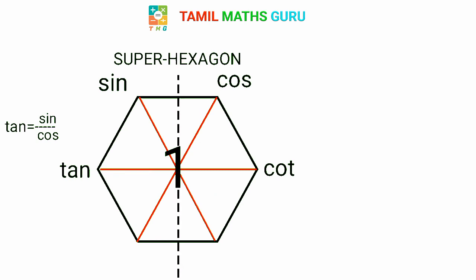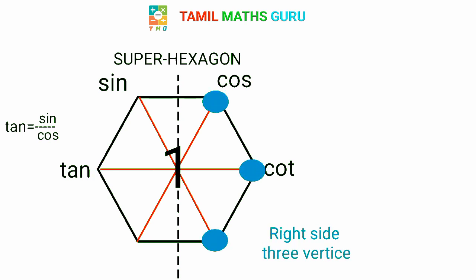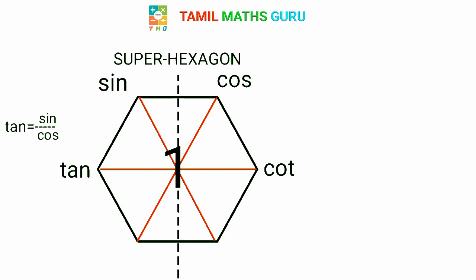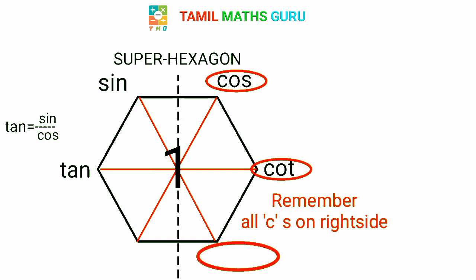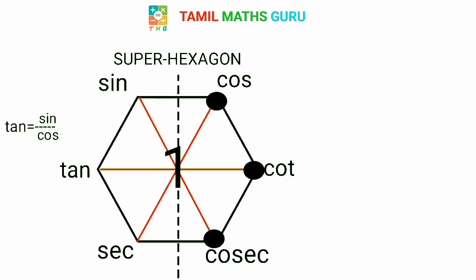The hexagon is divided into two parts. Left side has three vertices: sin, tan, and the remaining. Right side has three vertices: cos, cot, and the remaining. Starting from the right side, we start with sec.